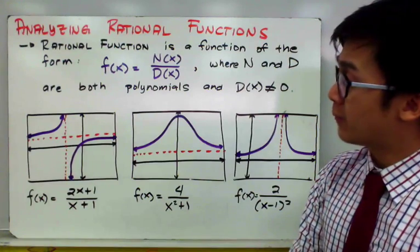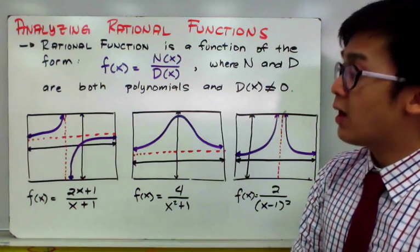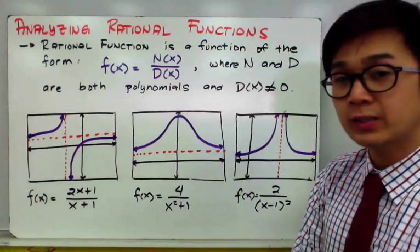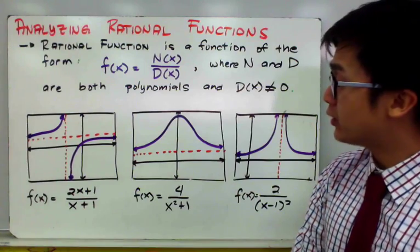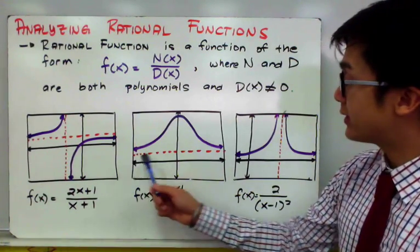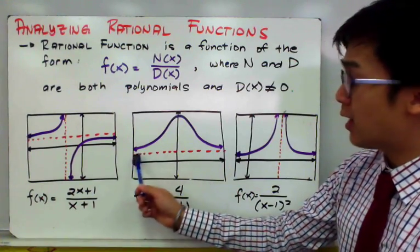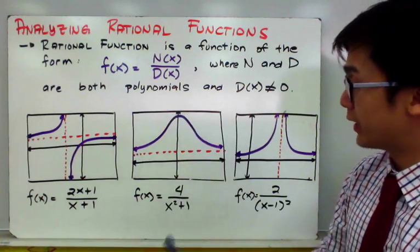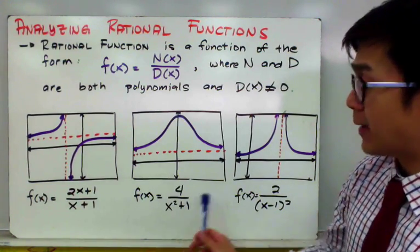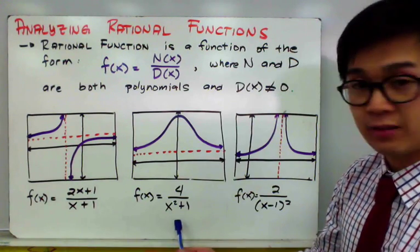Most of the time, we have a horizontal and vertical asymptote for a rational function, similar to our example number 1. But sometimes we can have a rational function, such as 4 all over x squared plus 1, where the graph has a horizontal asymptote but no vertical asymptote. This is one of the patterns that you will encounter when we graph a rational function.